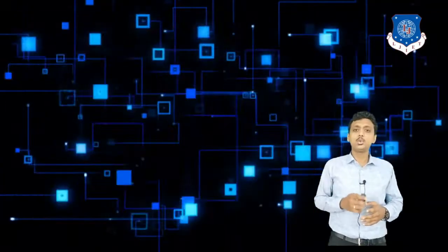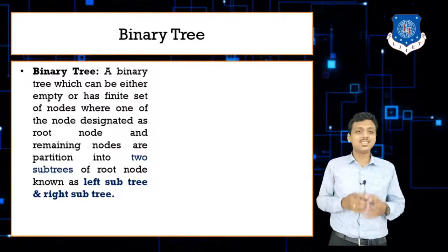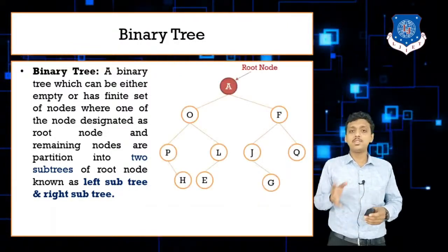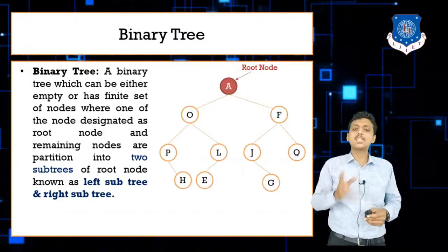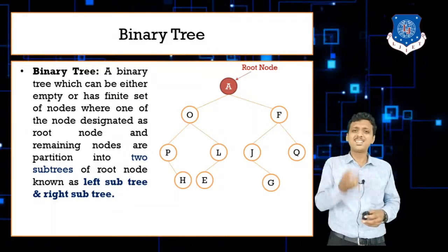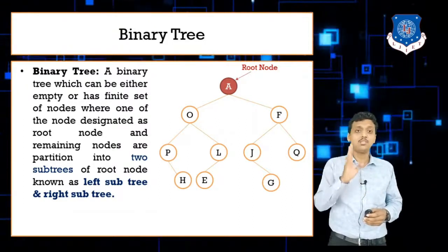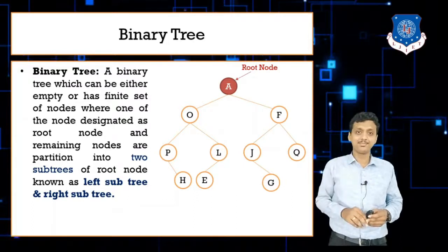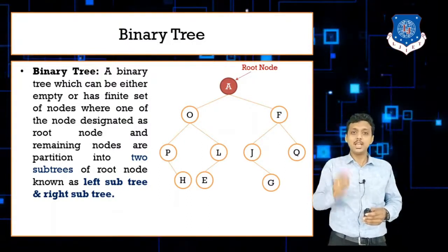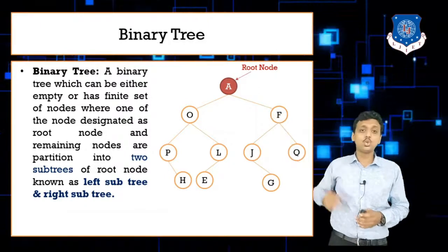Let's start with the first method to represent a binary tree using an array. I'm repeating the binary tree definition here so you get the idea, since in the previous session we covered many definitions. Simply put, a binary tree is one where each node contains a maximum of two children.